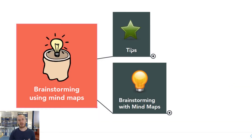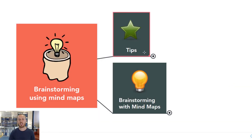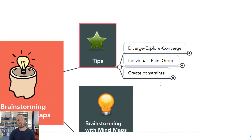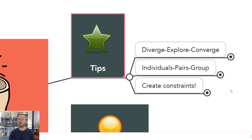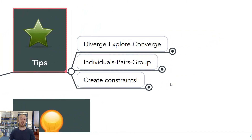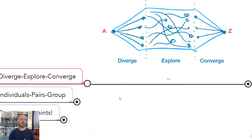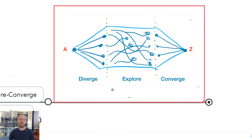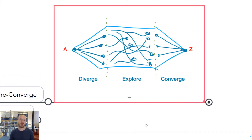Here we are looking at a MindMeister map. Let's think about some of the tips and things to keep in mind when planning brainstorming processes, either for ourselves or for our clients. We use this concept of diverge, explore, converge. It's been around for many years — we didn't create it, but it's a really good thing to keep in mind when planning a brainstorming process. Ideally we want to create a process that enables us to go broad and big with our thinking. That's the diverge phase, and it's really about getting lots of ideas out.